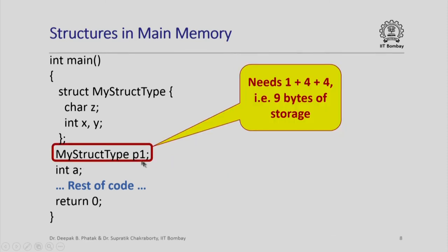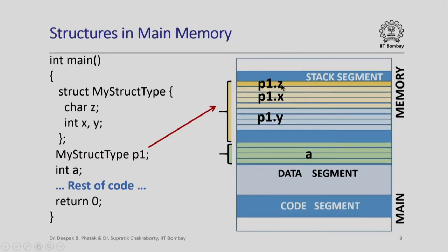Now, how much storage do we need for the variable p1? If you look at the definition of my struct type, you will see that I need one byte for the member z and four bytes each for the members x and y. Therefore, I need a total of nine bytes of storage. Once again, this being a local variable of main, storage for this will be allocated in the activation record for main, which will be stored in the call stack residing in the stack segment. So in the stack segment I will have storage for p1, with a byte reserved for p1.z and four bytes each reserved for p1.x and p1.y.